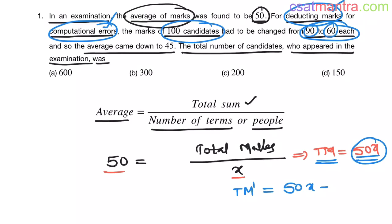90 minus 60, that is 30 marks. And for how many candidates you are deducting? 100 candidates. Into 100. Now this equals 50x minus 3000. This is the new total marks, after deducting marks for computational errors.